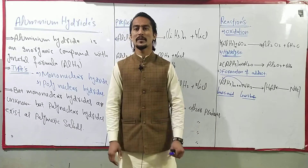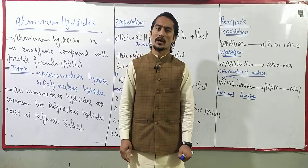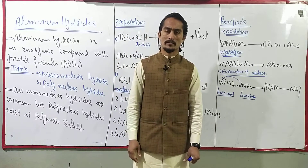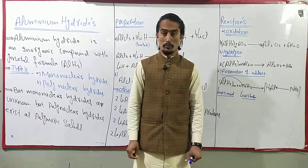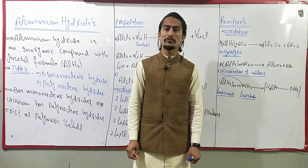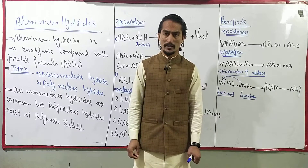Students, aluminium hydrides are basically of two types. These two types are mononuclear aluminium hydrides and polynuclear aluminium hydrides.